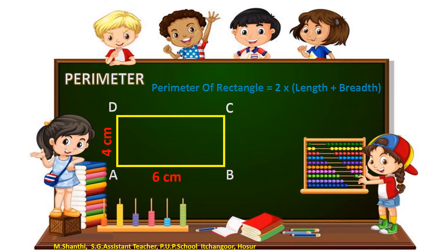AB equals CD and BC equals DA. AB equals 6 cm and BC equals 4 cm. Therefore, the perimeter of the rectangle equals 2 times (6 plus 4), that's equal to 20 cm.